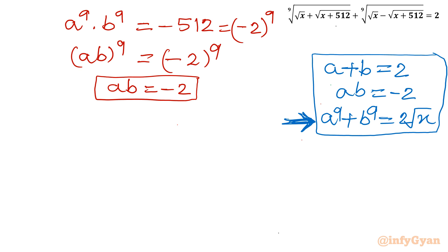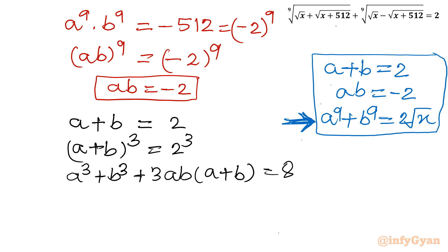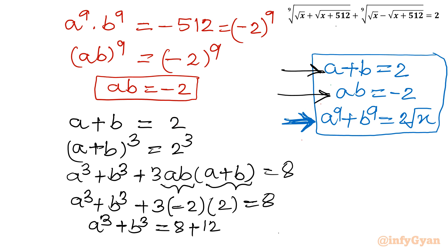Let's cube both sides of a plus b equals 2. Expanding: a³ plus b³ plus 3ab(a+b) equals 8. Substituting ab equals minus 2 and a+b equals 2: a³ plus b³ plus 3(−2)(2) equals 8, so a³ plus b³ minus 12 equals 8. Therefore a³ plus b³ equals 20.